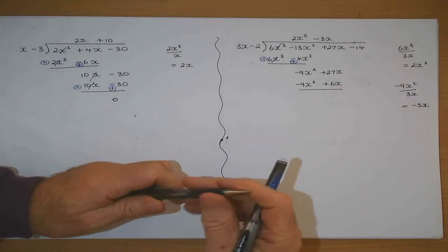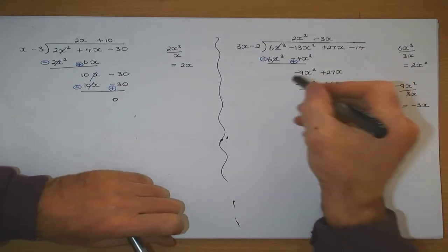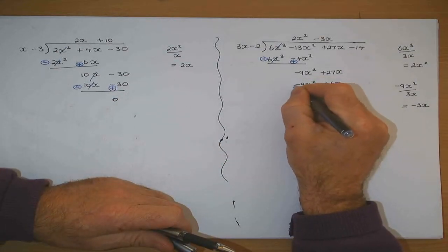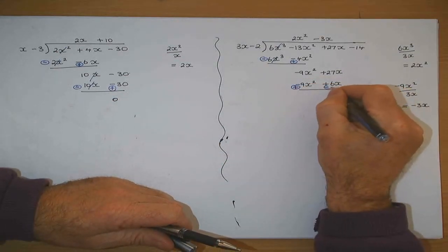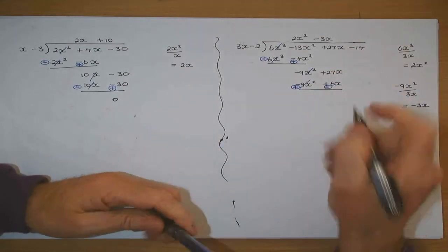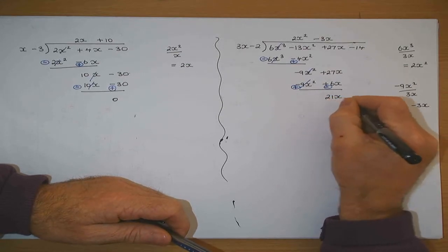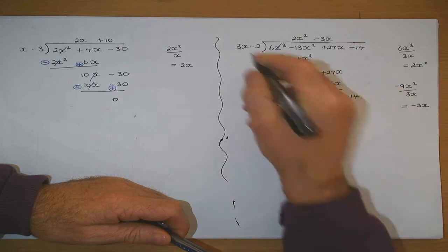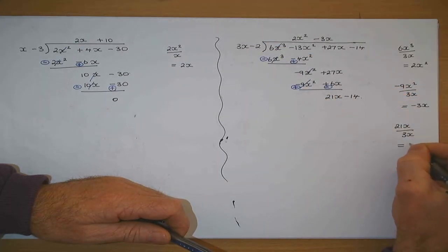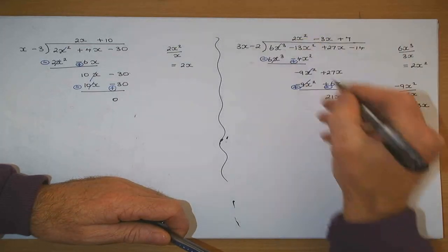Is there anything that confused you in the last few steps? Minus 9x squared plus 9x squared cancel. 27x minus 6x gives 21x. Divide 3x into 21x — 21x divided by 3x goes in 7. So it goes in plus 7.